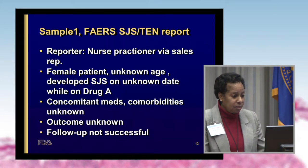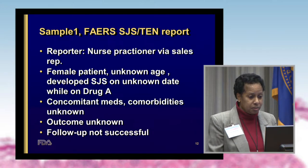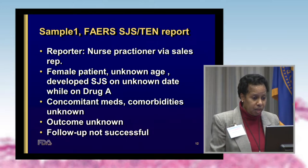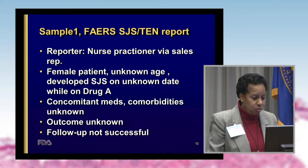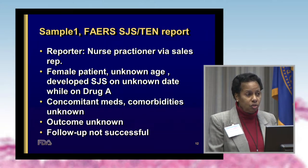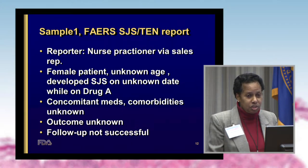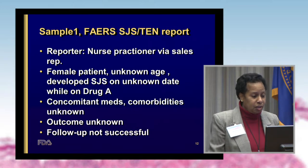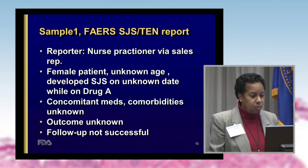I'll illustrate the missing information problem with a couple of samples. The first is a report from a nurse practitioner who reported that a female patient of unknown age developed SJS on an unknown date while on drug A. Concomitant medications, co-morbidities, and outcome were all unknown. Follow-up was attempted but not successful. We did not include this in our case series because it was judged unevaluable — there was just not enough information. However, it would still have constituted a signal requiring a full literature search.